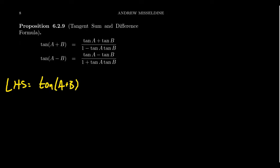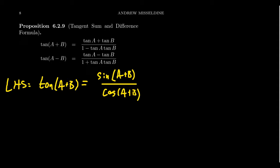Tangent, like we saw a moment ago by the ratio identity, it's just sine over cosine. So tangent of a plus b becomes sine of a plus b over cosine of a plus b. And now we're going to apply the angle sum identities for sine and cosine.